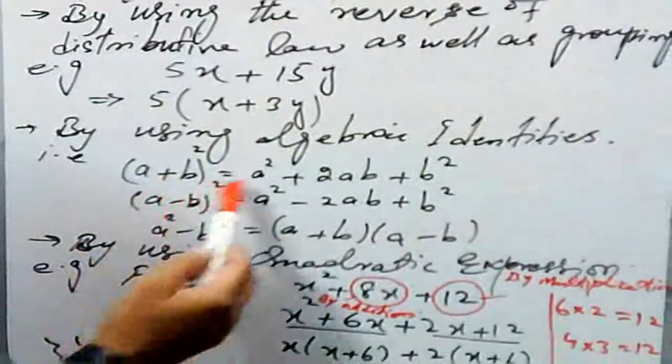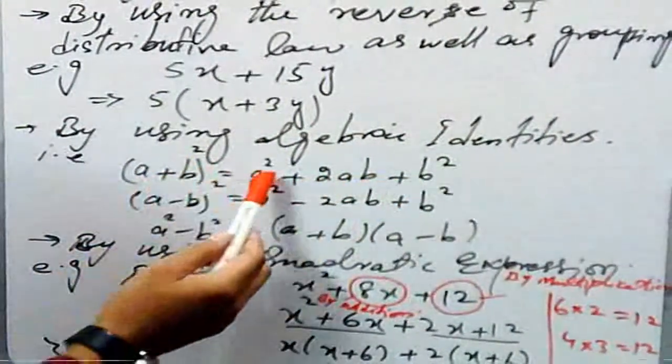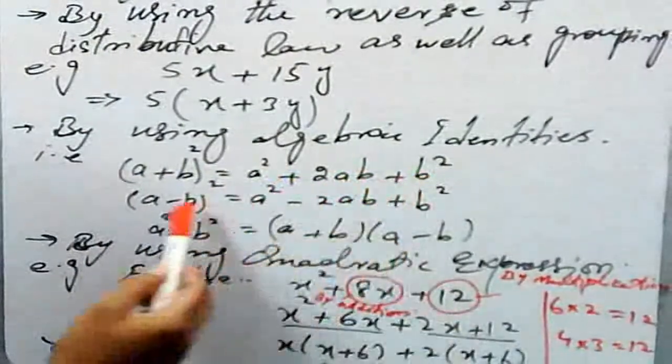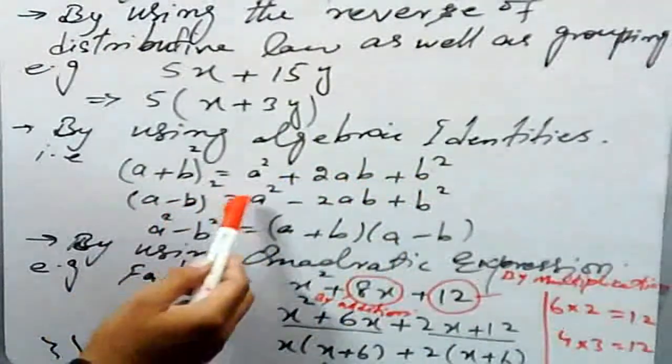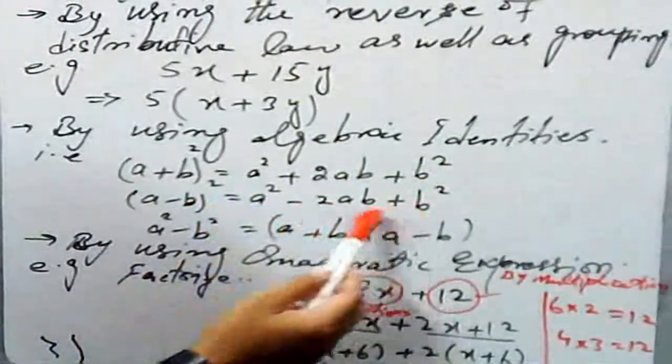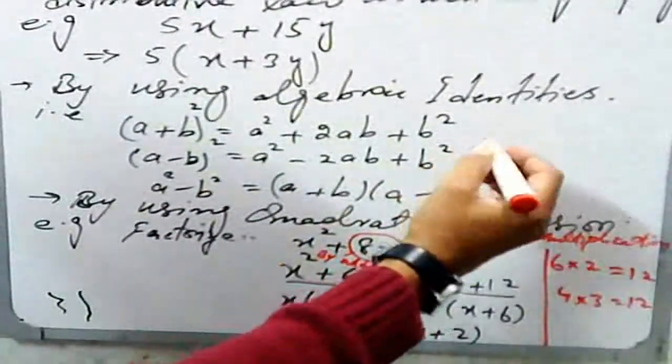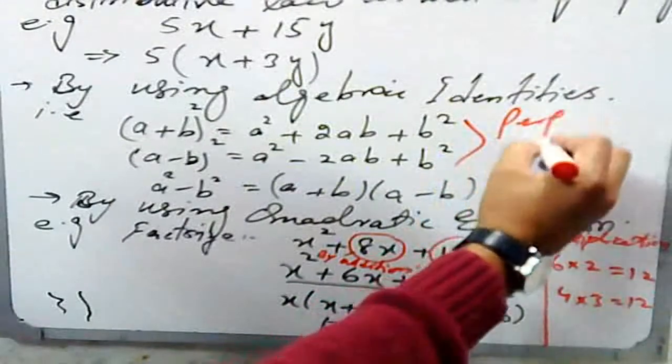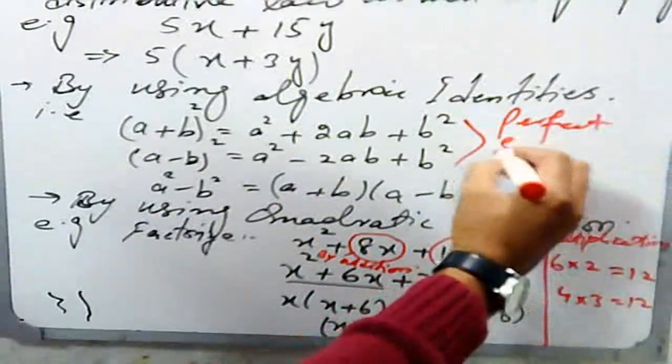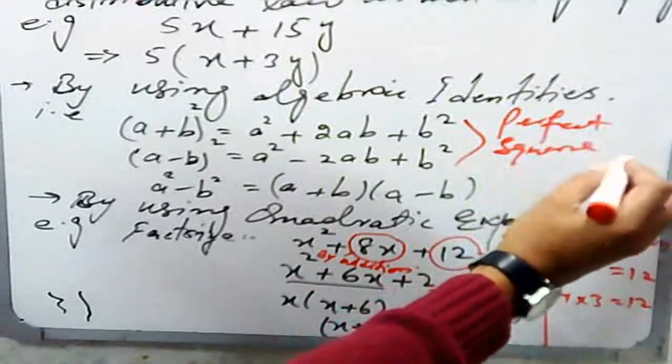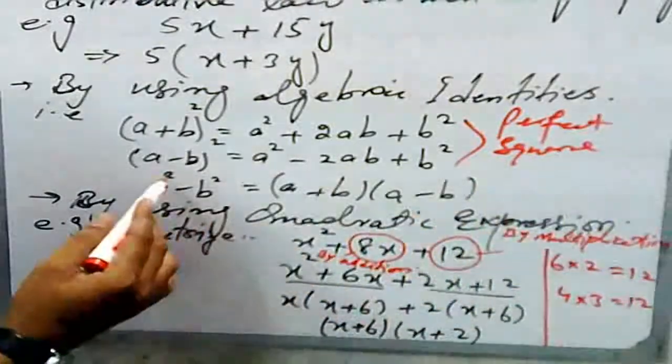have three well-known formulas: (a+b)² = a² + 2ab + b², and (a-b)² = a² - 2ab + b². These two are called perfect square formulas.